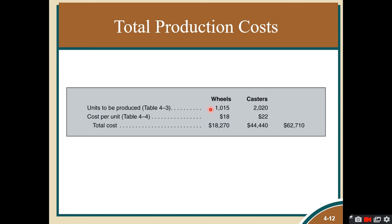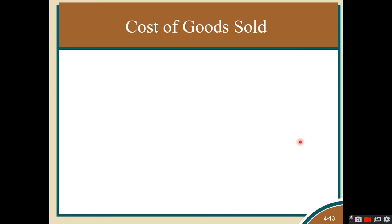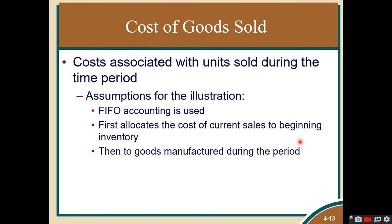Multiplying the production quantities by their respective unit costs: 1,015 wheels at $18 gives $18,270; and 2,020 casters at $22 gives $44,440. The total production cost for both products is $62,710. We can now compute the cost of goods sold.